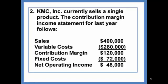KMC Inc. currently sells a single product. The contribution margin income statement for last year follows: Sales were $400,000, variable costs $280,000, contribution margin of $120,000, fixed costs $72,000, leaving net operating income of $48,000.